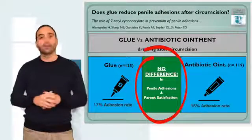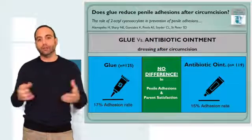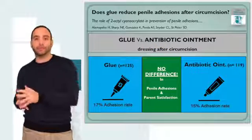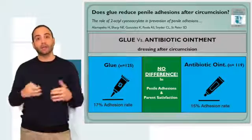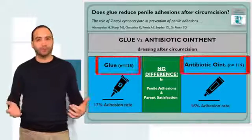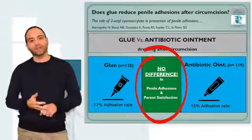So what did they find? They found no difference. They actually started off with 409 patients, but when it came to being able to collect data for follow-up, they only ended up with 243, but the two groups were pretty much equivalent. And when they looked at the two groups, they found no difference. The penile adhesion rate was the same. Parent satisfaction was the same.